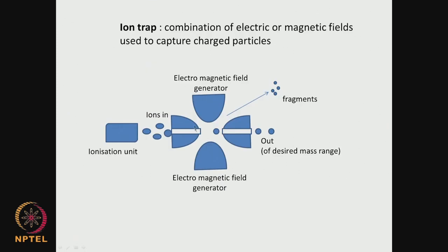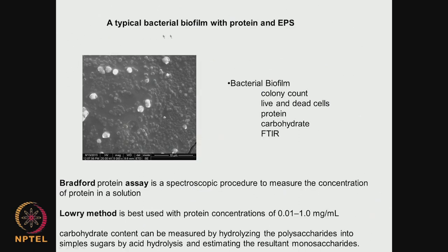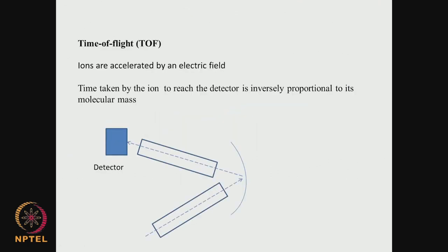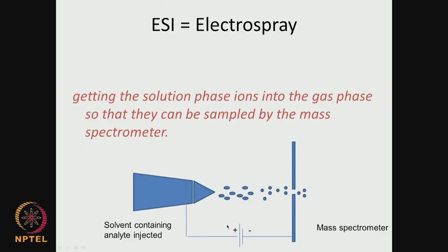Ion trap and time of flight are the two things widely used to capture ions of interest. For example, from a biofilm sample, I can take samples and look at the molecular weight of proteins using MALDI-type or ESI-type mass spectrometry to get a feel for what molecular weight proteins are present on my surface.